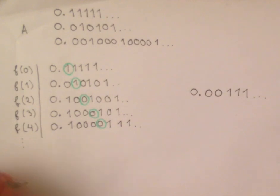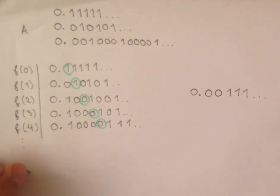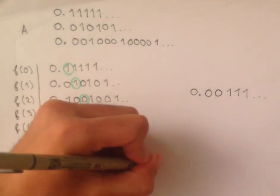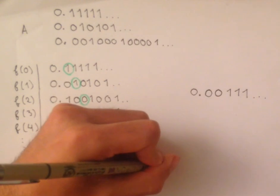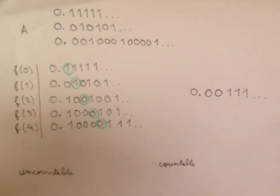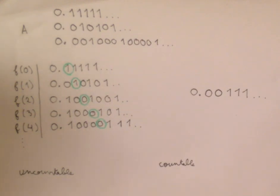We use the word uncountable to describe sets that have a cardinality strictly greater than the natural numbers. Countable sets include the natural numbers and all finite sets.